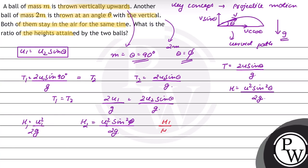So the ratio between them, that is H1 upon H2, is equal to u1 ka whole square upon u2 ka whole square sin square theta. From equation number 1, u1 is equal to u2 sin theta, so u1 ka whole square will be equal to u2 square sin square theta. So it's written as u2 whole square sin square theta upon u2 whole square sin square theta.